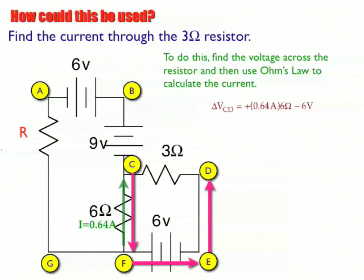And then as I go up to point D, there's no resistance, there's no battery there, so there's no change between D and E. So when I do the calculation, I get a potential difference of negative 2.16 volts. That means the potential difference across the 3 ohm resistor is also negative 2.16 volts.